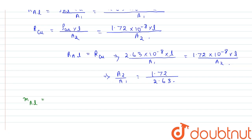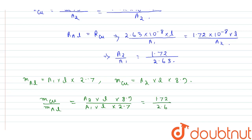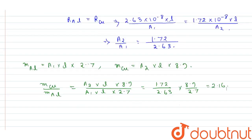Now since relative densities are given, we write mass of aluminum = A1 × L × 2.7 and mass of copper = A2 × L × 8.9. Therefore, mass of copper / mass of aluminum = (A2 × L × 8.9) / (A1 × L × 2.7). Here L cancels out, and substituting A2/A1 = 1.72 / 2.63, we get (1.72 / 2.63) × (8.9 / 2.7) = 2.16.